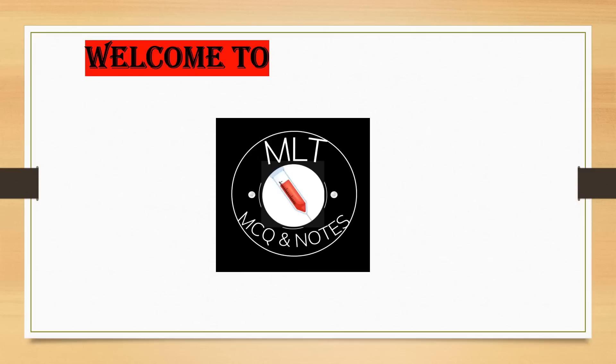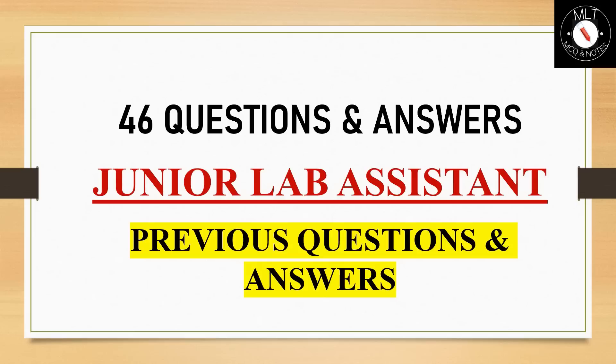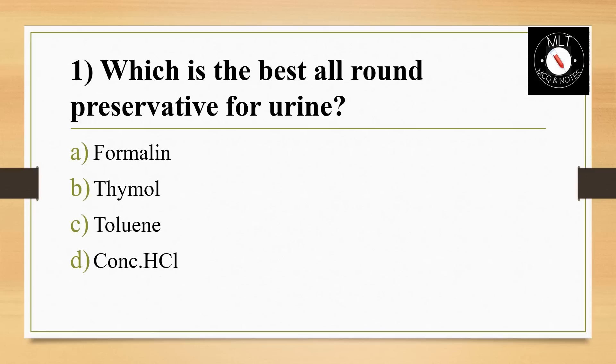Hi everyone, welcome to MLTM CQN Notes. In this video, I am discussing 46 previous questions and answers of junior lab assistant exam. First question: which is the best all-round preservative for urine? Options: formalin, thymol, toluene, or concentrated HCl. Answer is Option C, toluene.